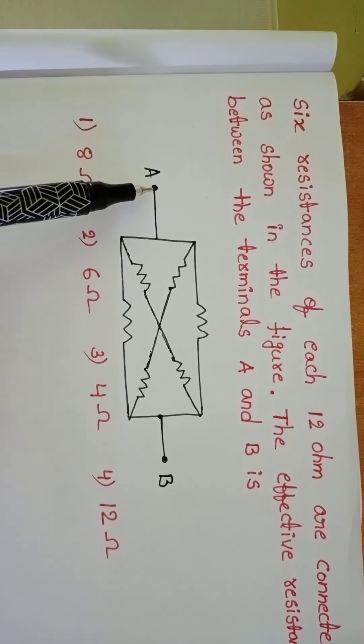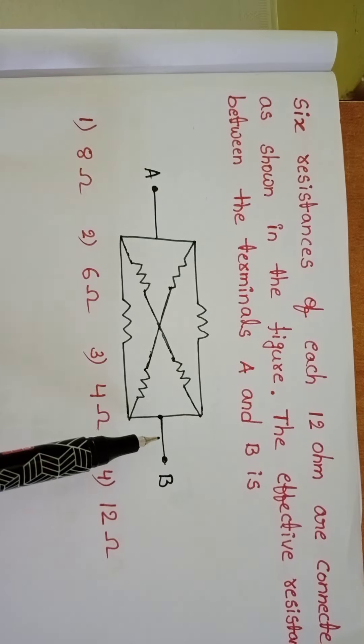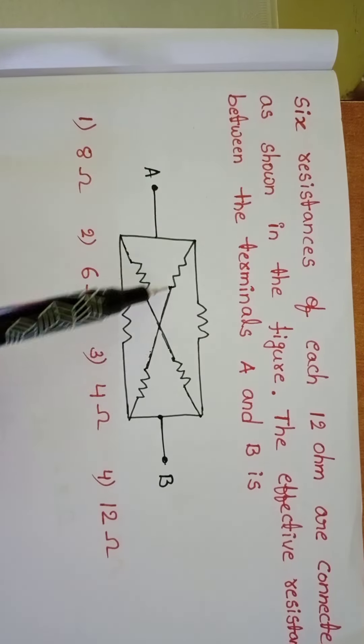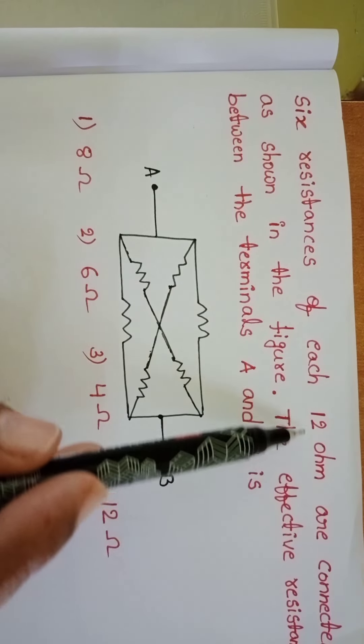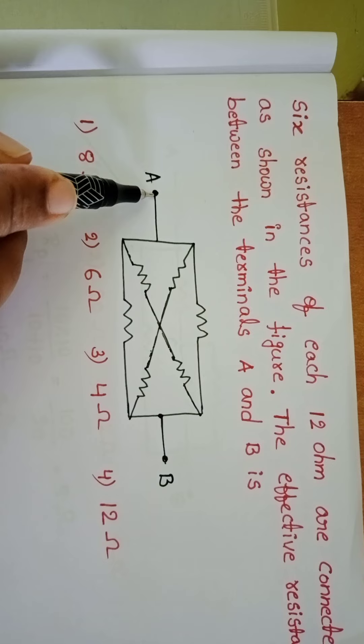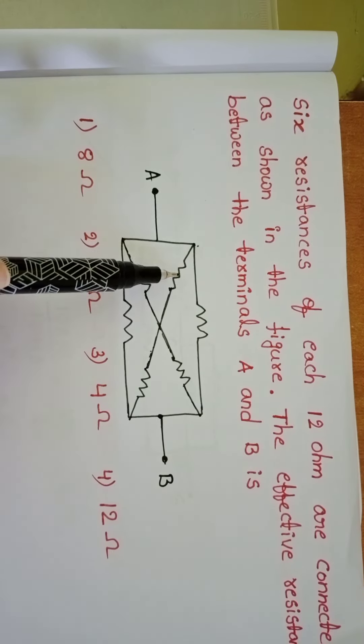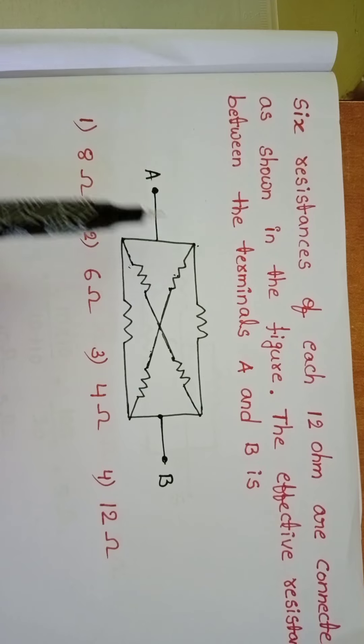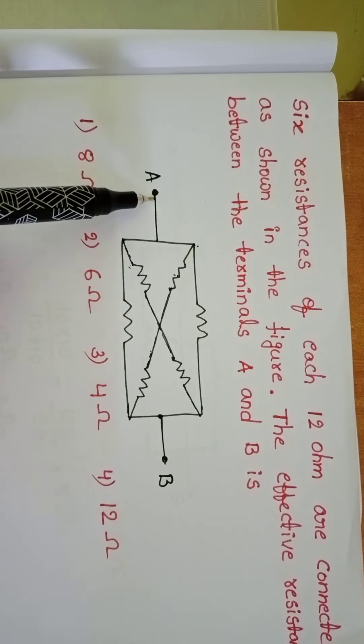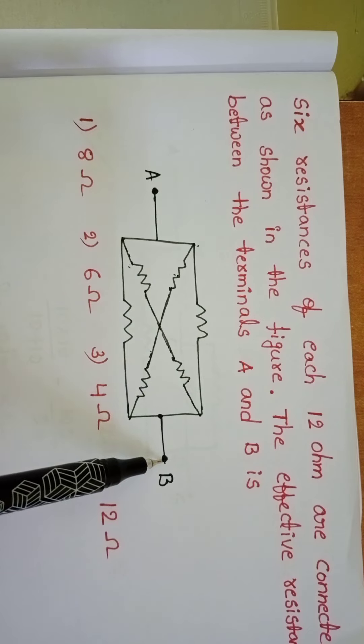We want to find out the equivalent resistance between A and B. Here, each resistor of resistance is 12 ohm. This terminal point is A. There is no other terminal point. These two resistors are connected to the terminal point A only, and these two resistors are connected to the point B.